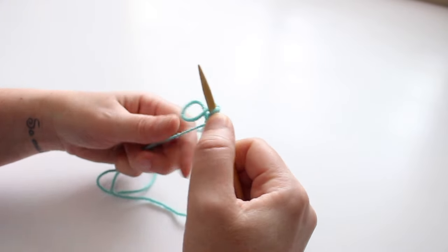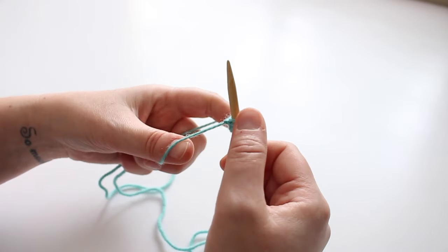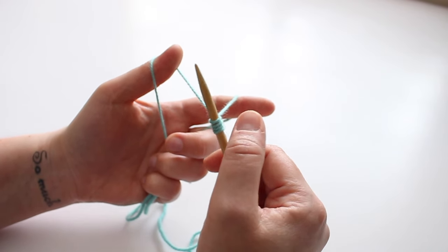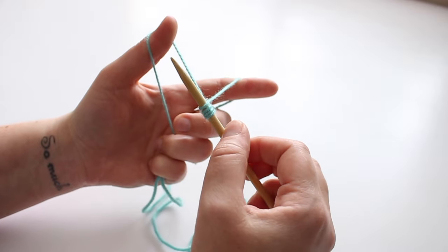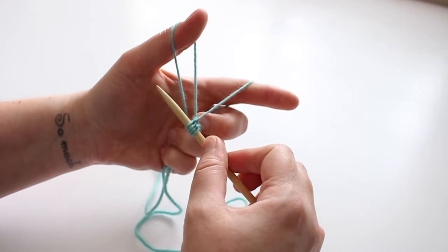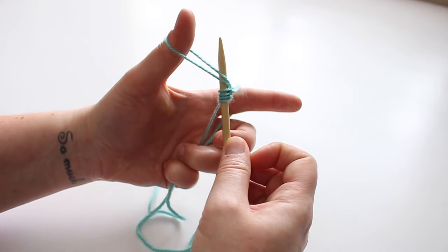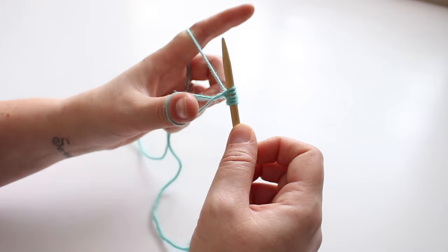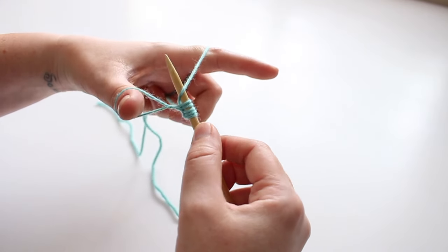You'll notice I keep grabbing the stitches with my thumb—that's just from not wanting the stitches to fall off. I'll show you one more time. Hopefully I can do it without covering the stitches. We go under both loops and back between, twist our hands and pick up the back loop.